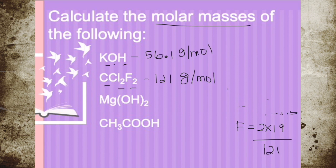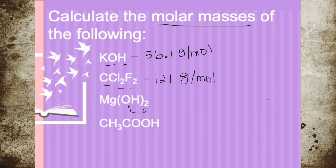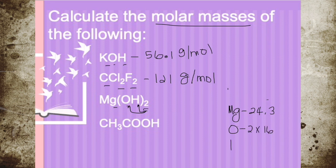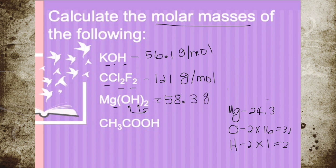Next example, we have Mg(OH)2. If there is a parenthesis, we multiply the number outside the parenthesis by the subscripts inside. If there are no subscripts, it is considered to be only 1. So Mg is 1, giving 24.3 grams per mole from the periodic table. Oxygen will be 2 times 16, which is 32, and hydrogen will be 2 times 1, which is 2. So 24.3 plus 32 plus 2 gives us a molar mass of 58.3 grams per mole for Mg(OH)2.